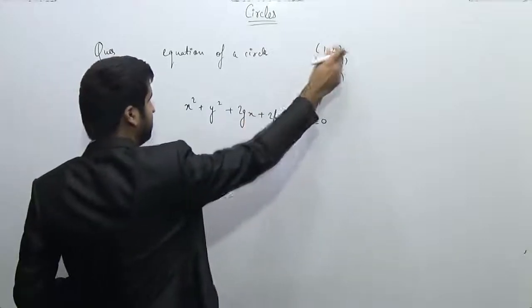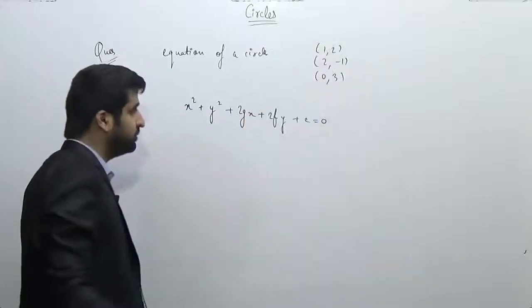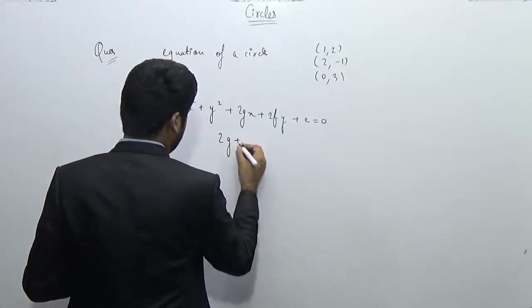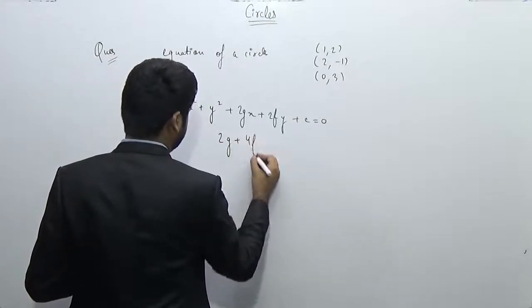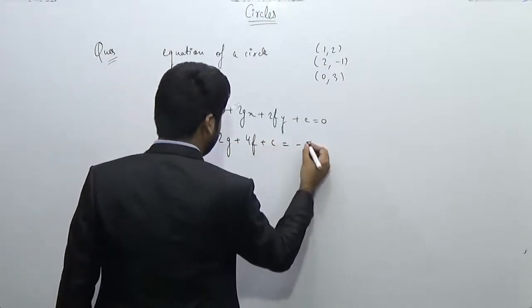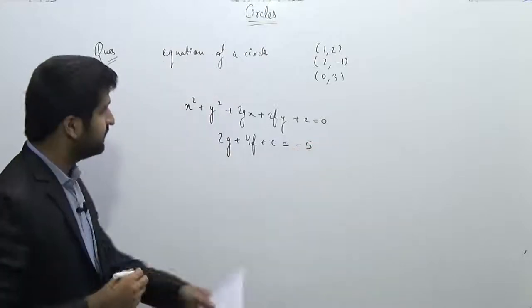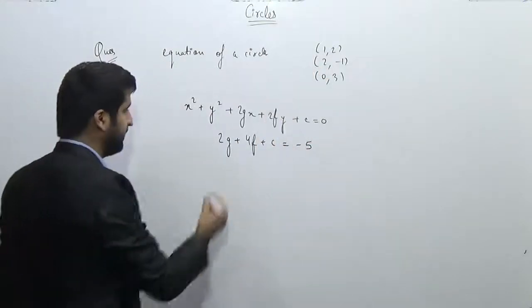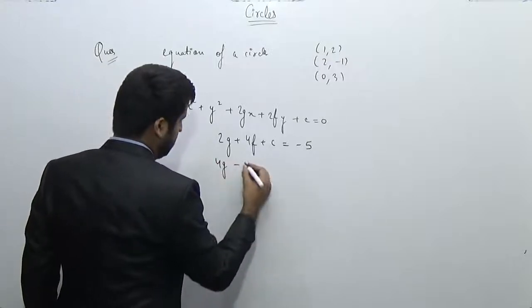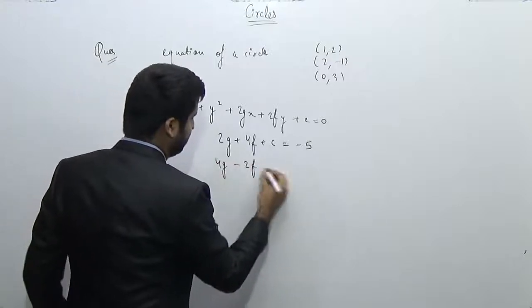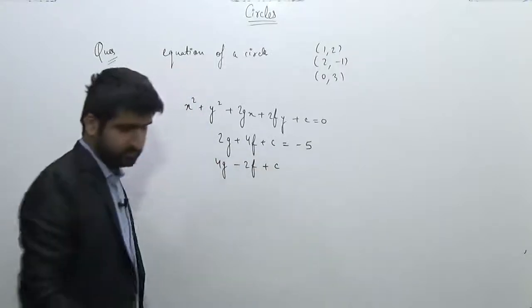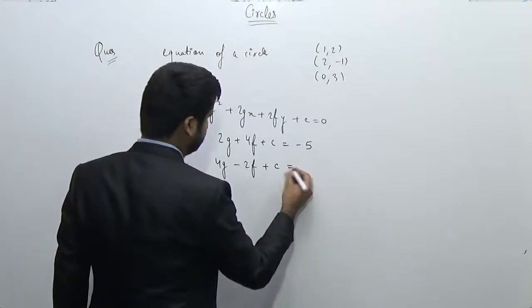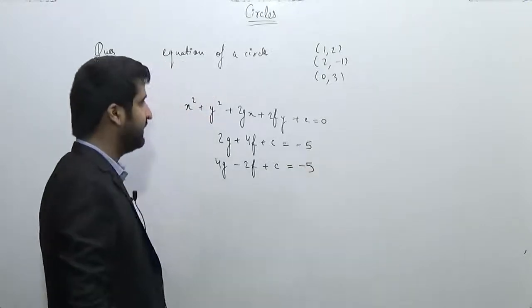If I put the point (1, 2), I get: 2g + 4f + c = -5. And if I substitute (2, -1), I get: 4g - 2f + c = -5.